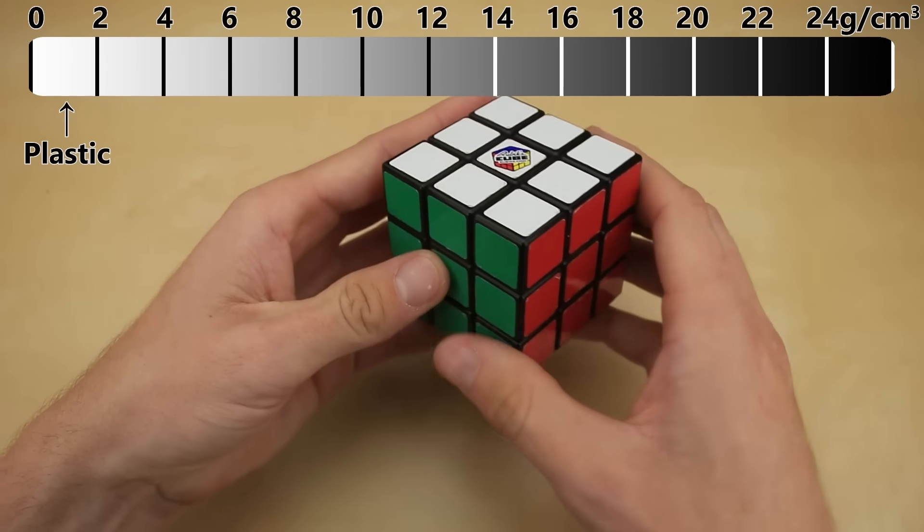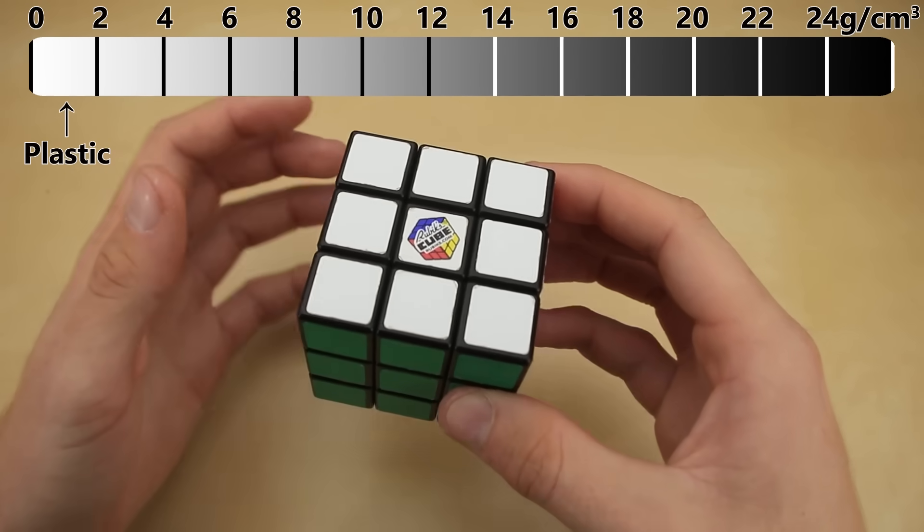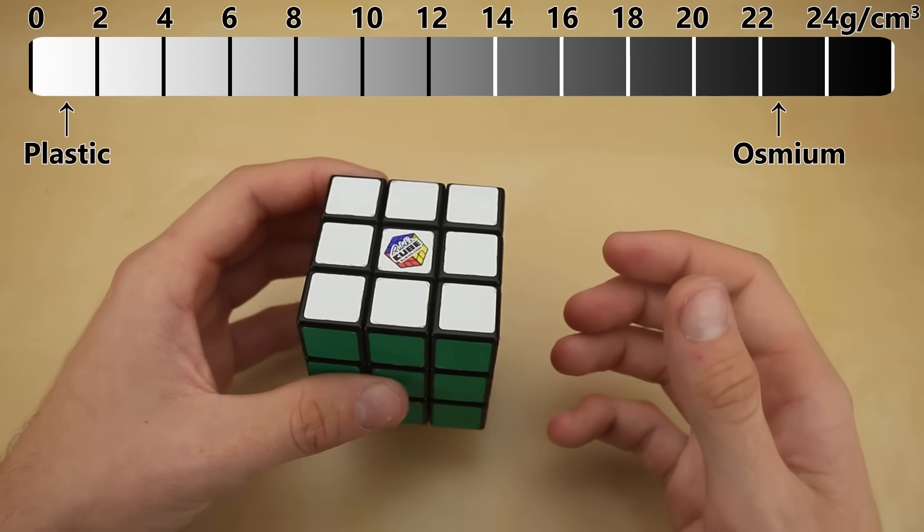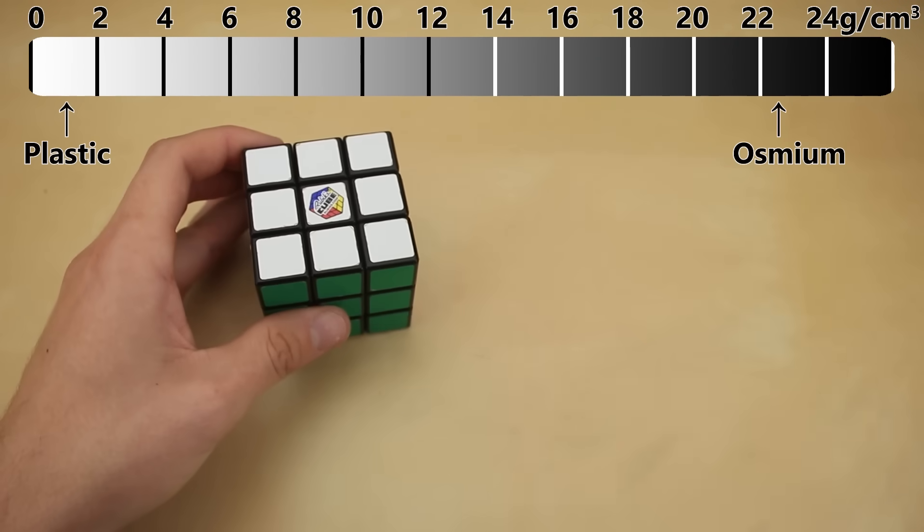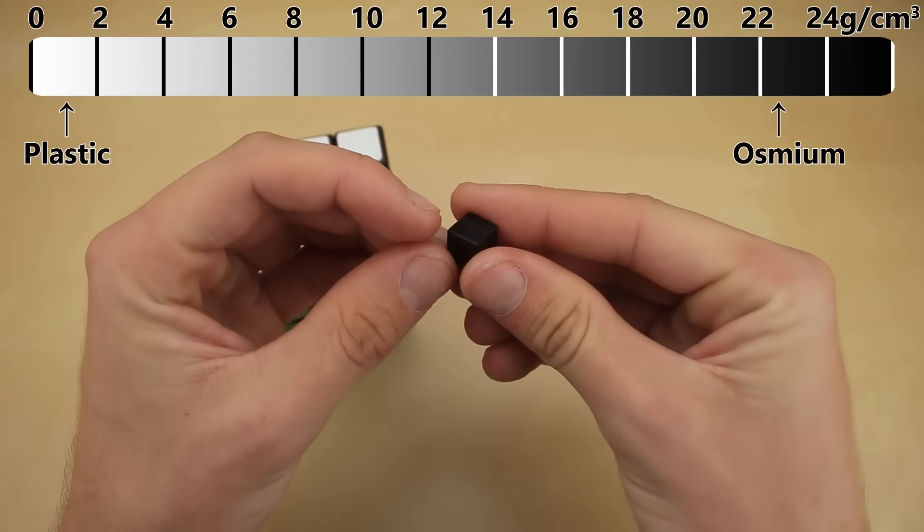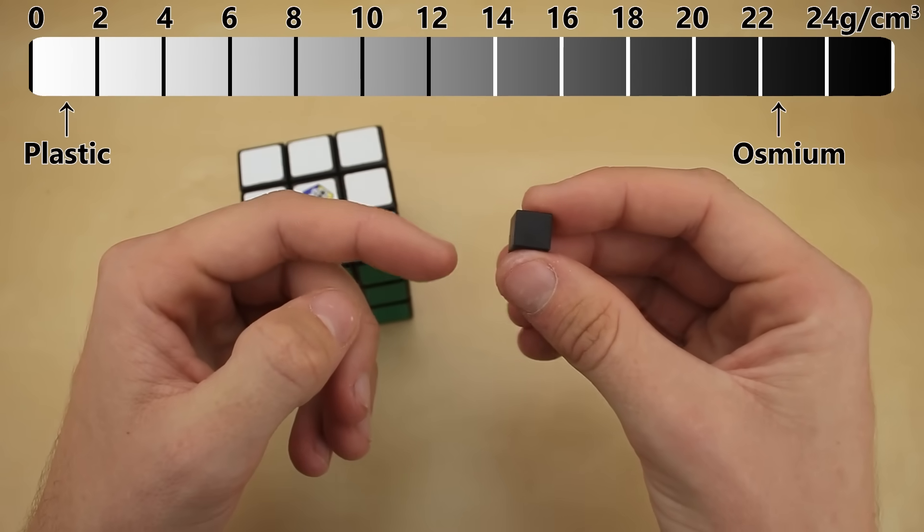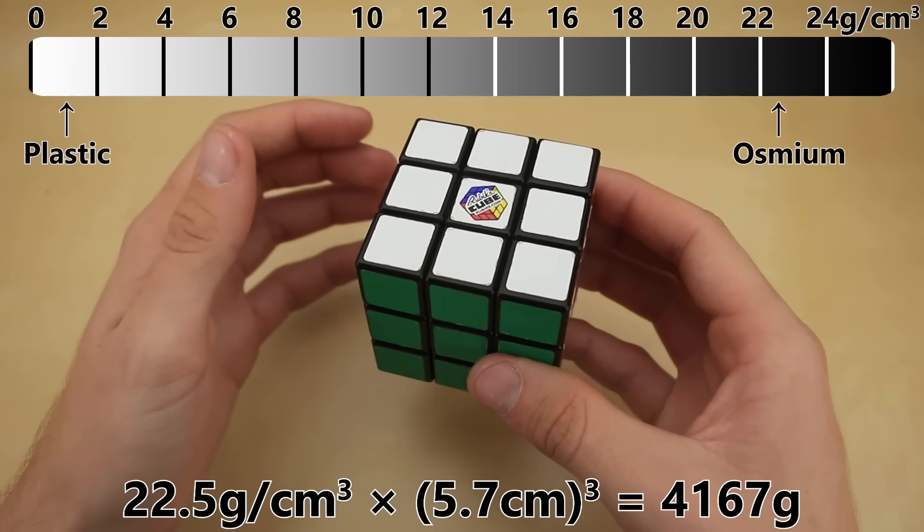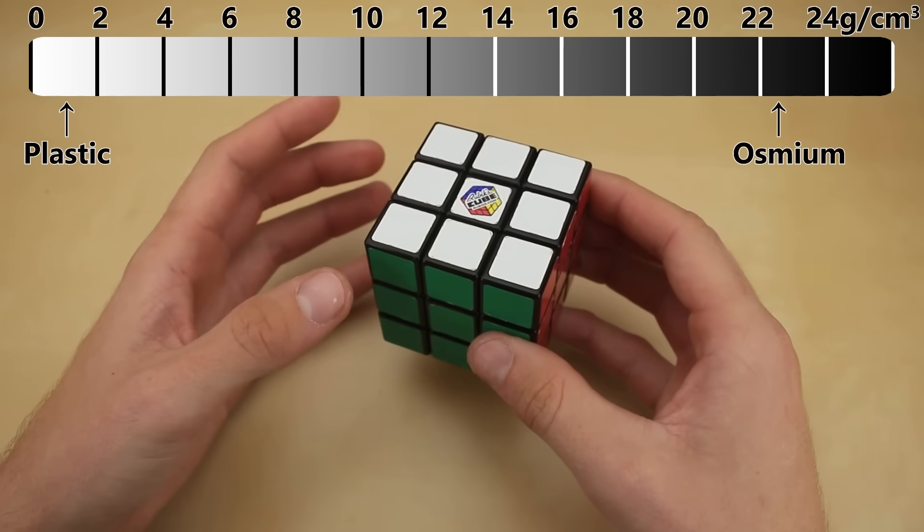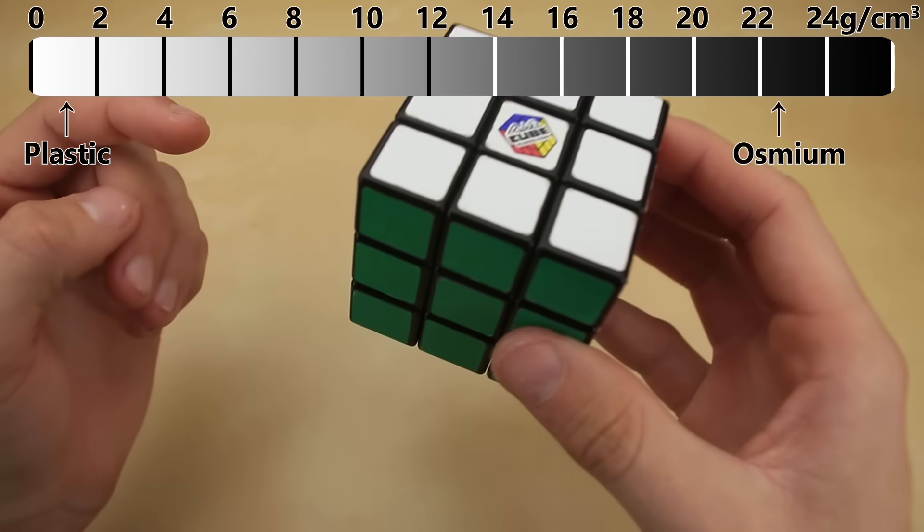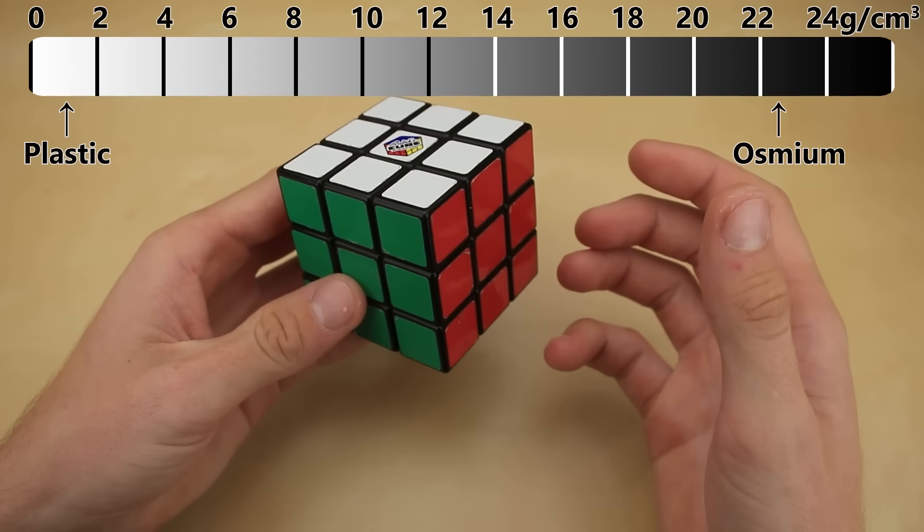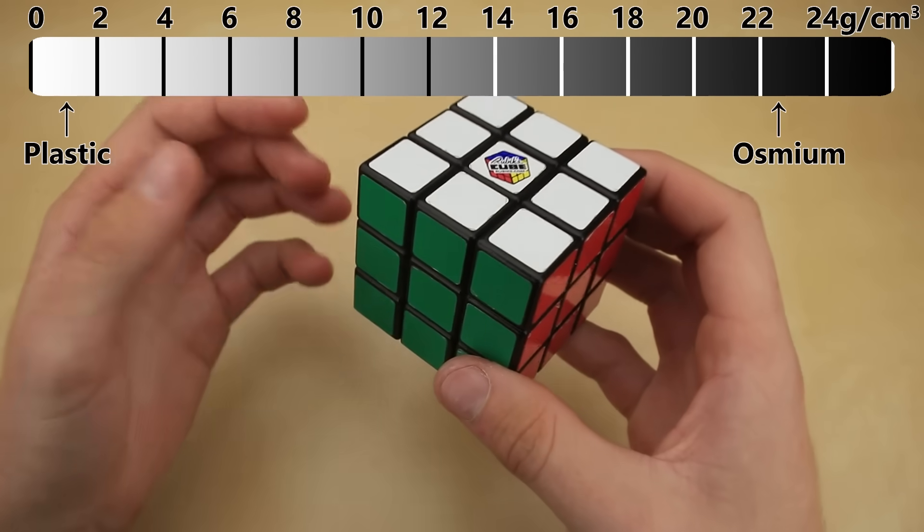Now on the complete other end of the spectrum, the world's densest element is called osmium, at over 22 grams per cubic centimeter. That means if you had a solid 1 centimeter cube of osmium, it would weigh over 22 times as much as this little plastic one. A solid osmium Rubik's Cube would weigh an insane 4,000 grams. But unfortunately, even if it were possible to make a solid osmium Rubik's Cube, the raw material alone would cost well over $100,000, so that is squarely off the table.